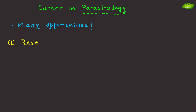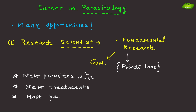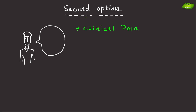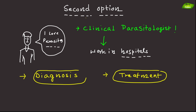Let's look at the career options available in parasitology. The first is research scientist, where individuals conduct fundamental research in universities, government institutions, or private labs. This work could involve discovering new parasites, developing new treatments, or studying host-parasite interactions. The second option is clinical parasitologist, working in hospitals or diagnostic labs to identify and study parasites that cause diseases in humans — a role critical for accurate diagnosis and treatment.